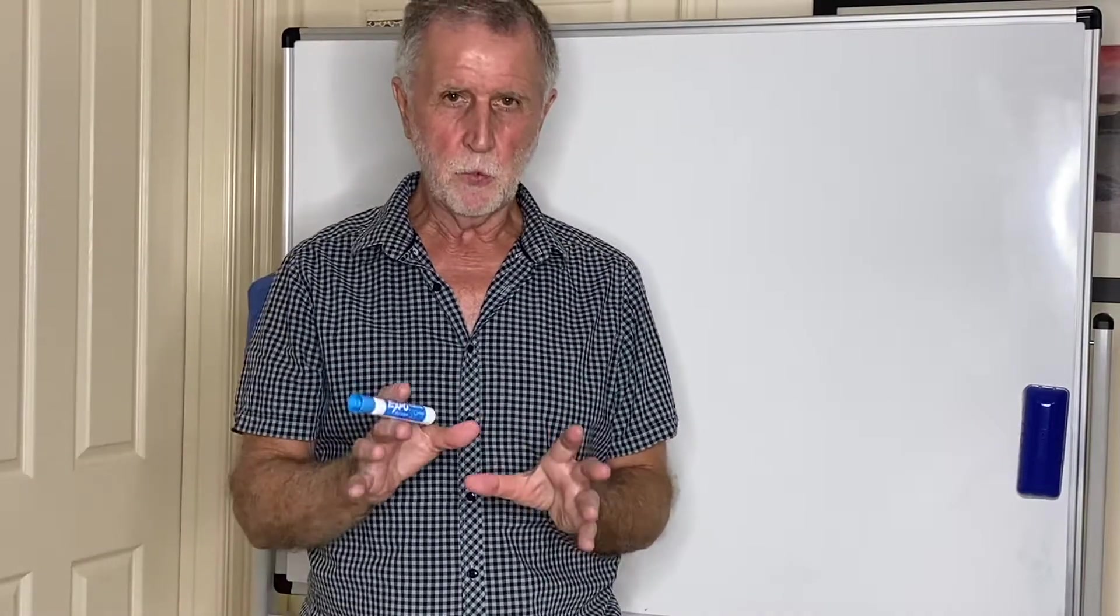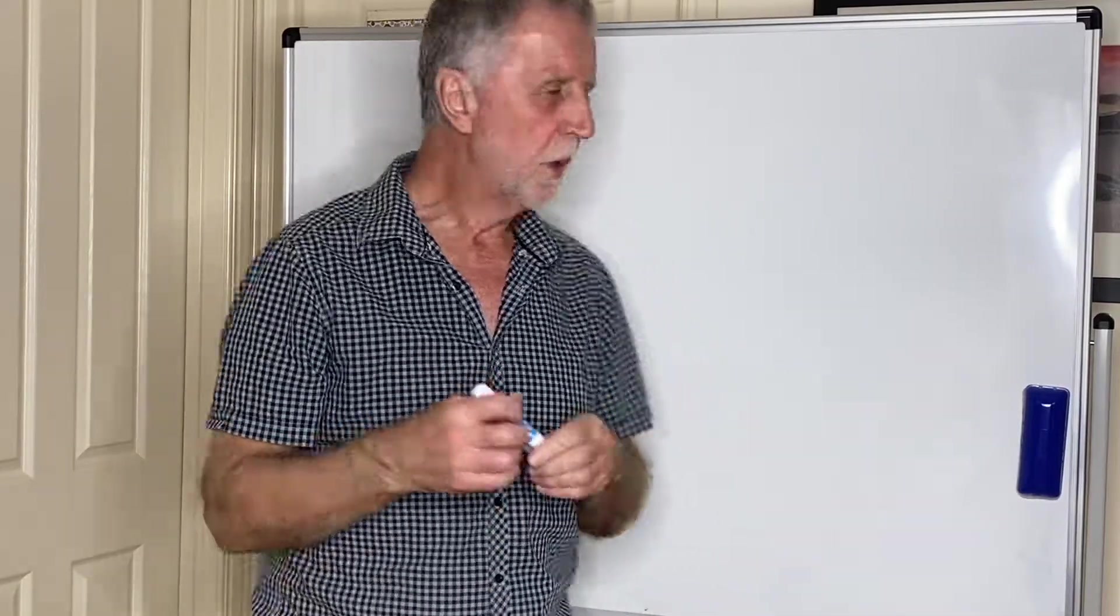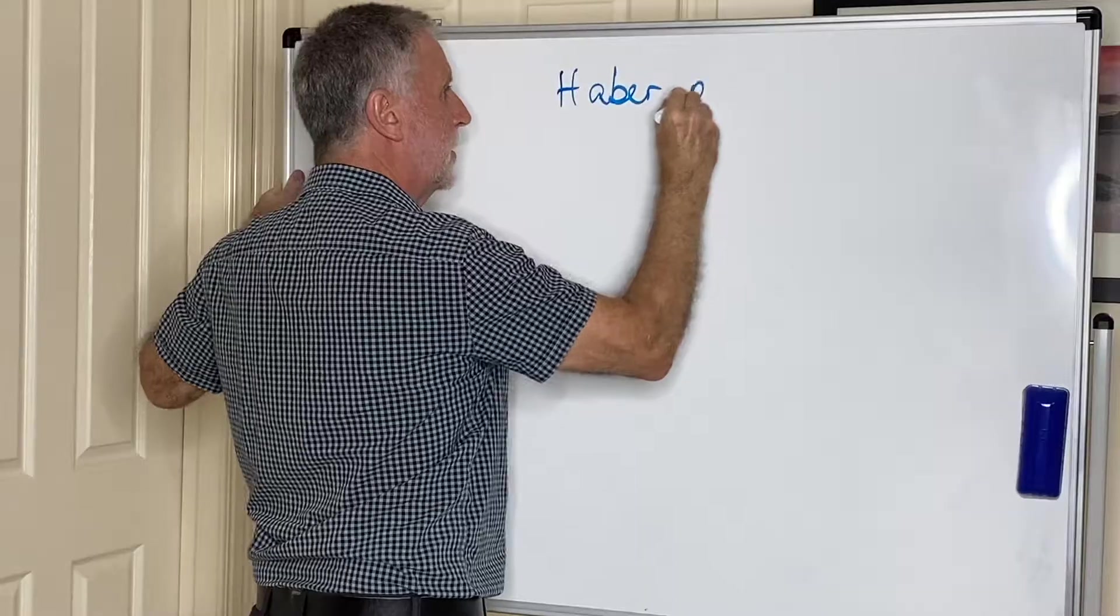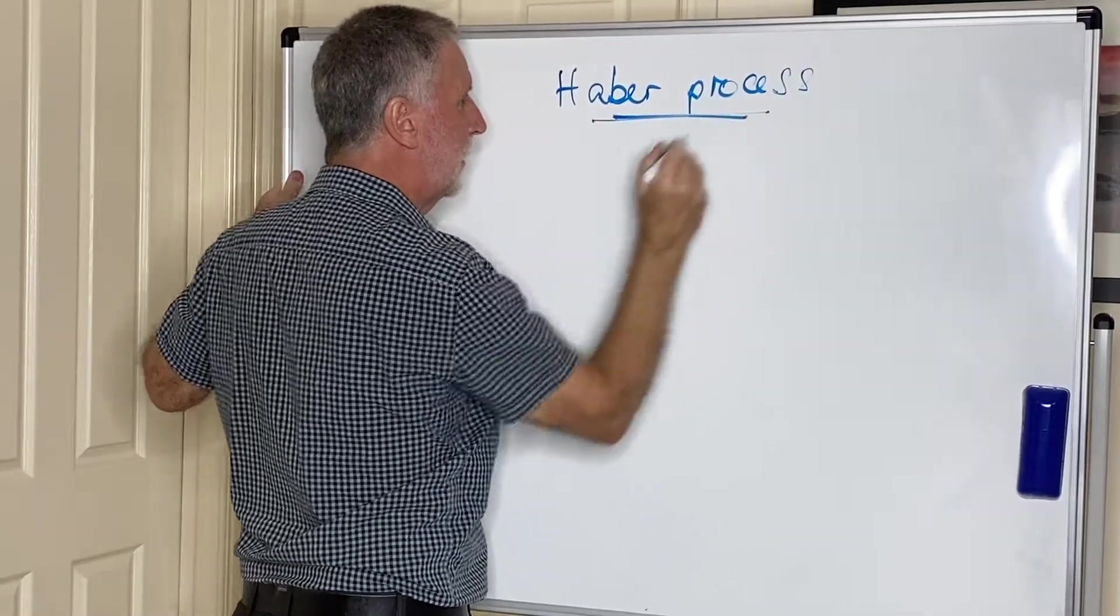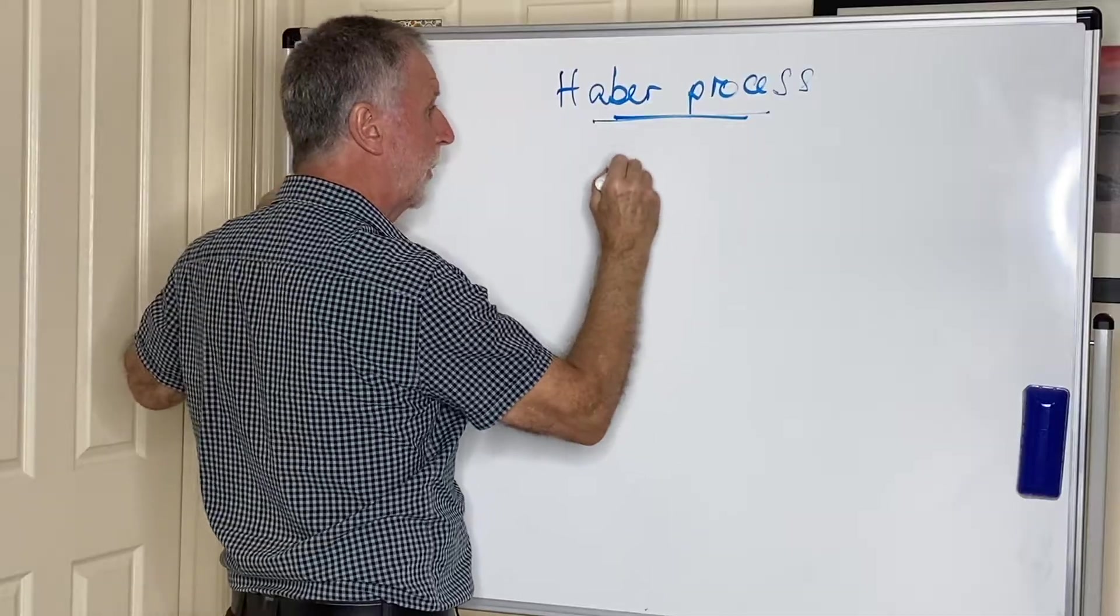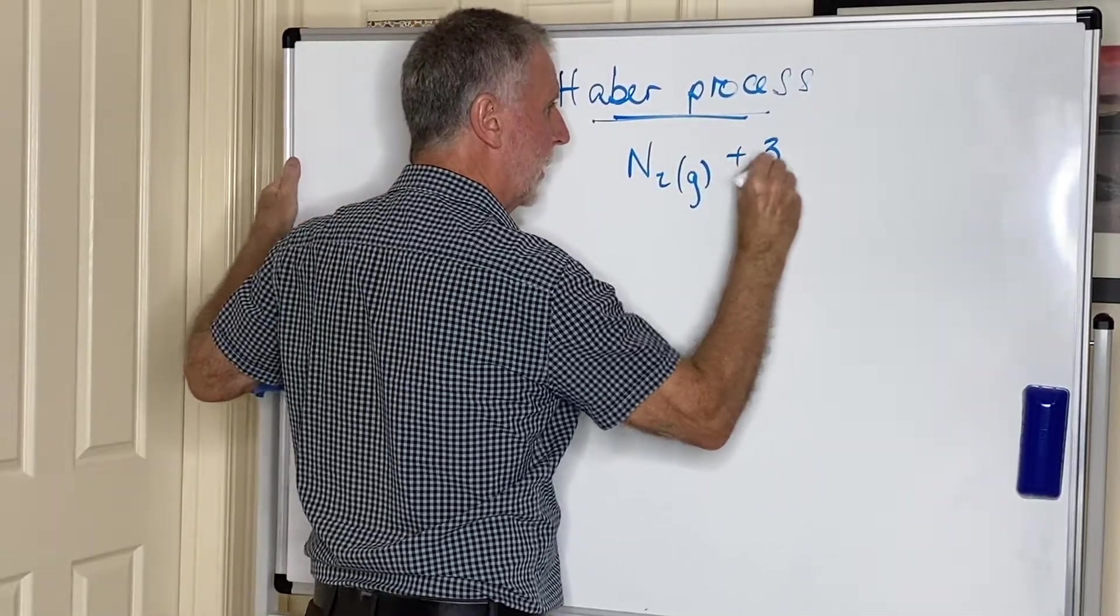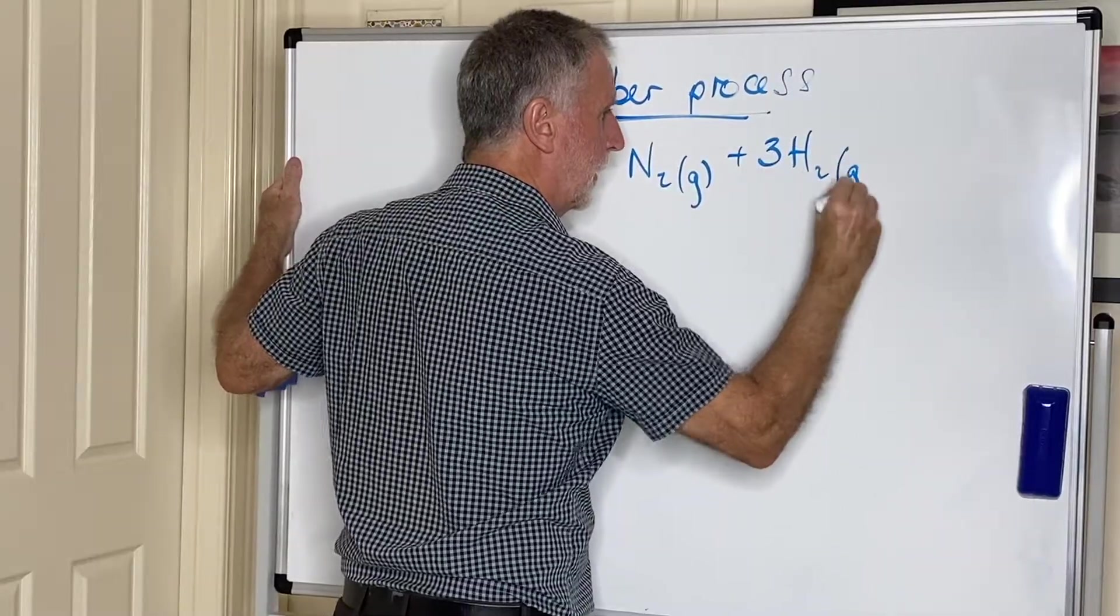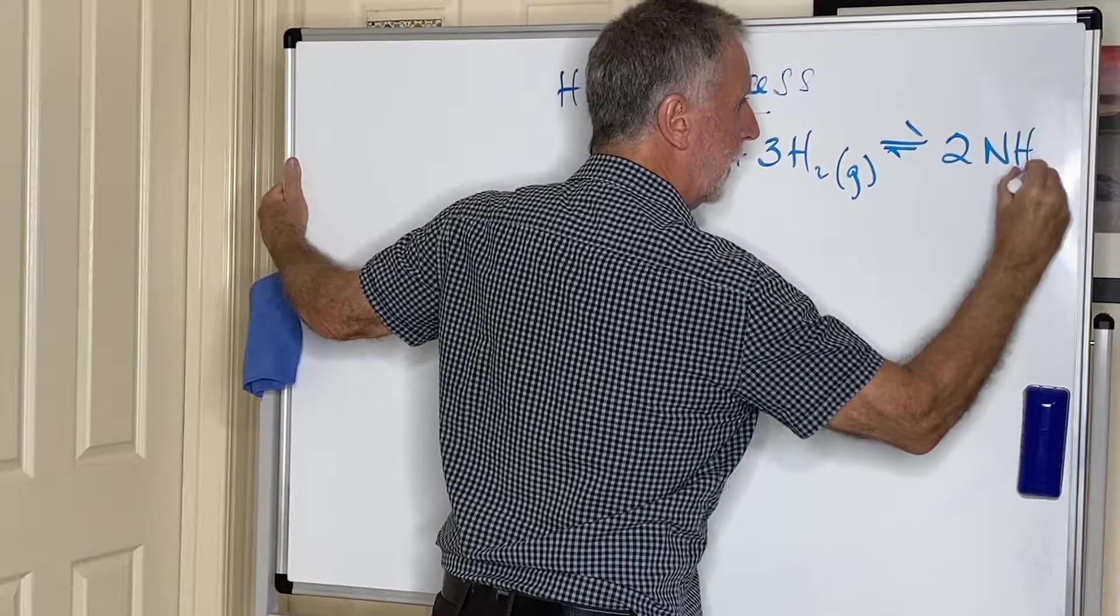There are two very important industrial processes that you need to know about. One is the Haber process, which is named after Fritz Haber who got a Nobel Prize for this. That's where nitrogen gas reacts with hydrogen gas to make ammonia.